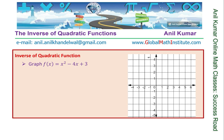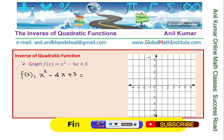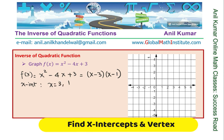We are given that f(x) equals x squared minus 4x plus 3. This can be factored: 3 times 1, both negative, will give us minus 4. So we can write this as (x minus 3)(x minus 1). That gives us two x-intercepts. So the x-intercepts are at 3 and 1. Let me mark these two points on the graph.